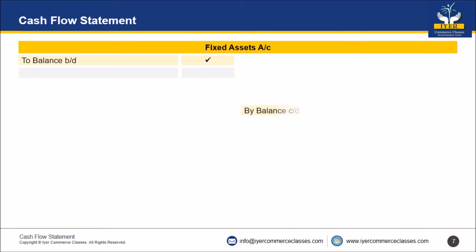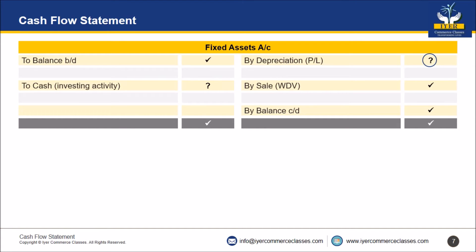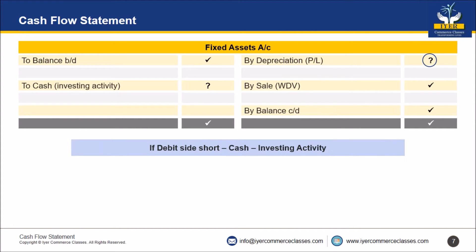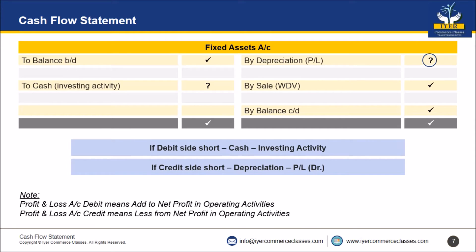Now we start with the fixed asset account. You will start with: to balance brought down, by balance carried down — both amounts will be given in the balance sheet. Then for asset purchase: to cash; for depreciation: by depreciation; for asset sold: by sale. Total — out of these five items, four will be given to you and the fifth will be the missing balancing figure. If the debit side is short, you write cash and transfer it to investing activity. If the credit side is short, you write depreciation and transfer it to profit and loss account debit — which means it goes to operating activities.